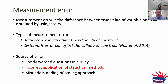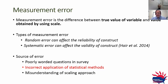Measurement error is the difference between the true value of a variable and the value obtained by using a scale. The types of measurement error can be summarized in two categories: random error, which can affect the reliability of the construct, and — which is even more dangerous — systematic error, which can affect the validity of the construct. Some sources of error include poorly worded survey questions impacting reliability, which is why we do pilot studies to ensure questions are understood consistently by all participants.